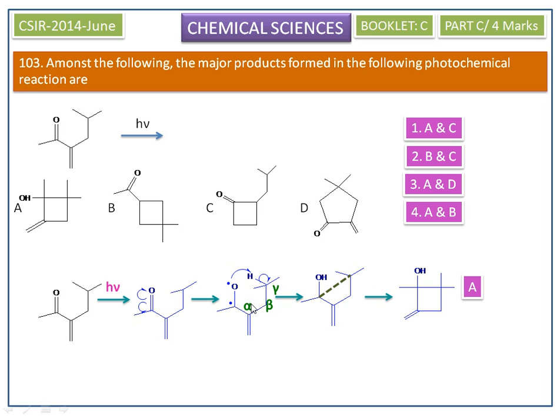The next possible products may be according to Norrish type 2, that is beta cleavage - cleavage of the beta bond to give an olefin and an enal.